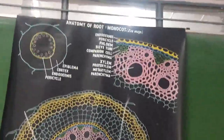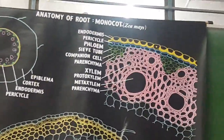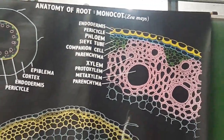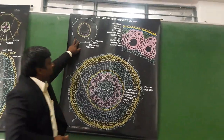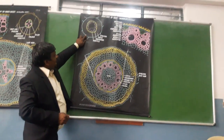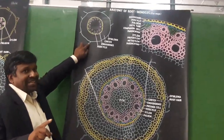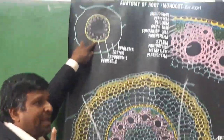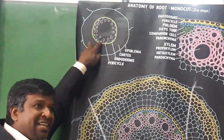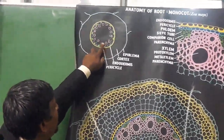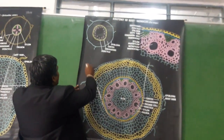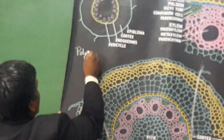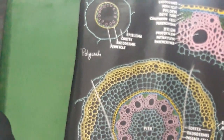The monocot root has a fibrous root system, and we have taken the example of Zea mays, which is maize. In its ground plan, you notice an outermost layer of epiblemma with root hairs. The innermost layer of the cortex is endodermis, a single-layered endodermis. Next to the endodermis is the pericycle layer. There are many patches of xylem and phloem — not countable like 4 or 6, but many. This condition is called polyarch, so the stele is polyarch.